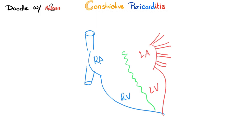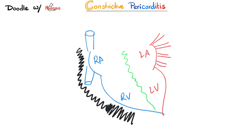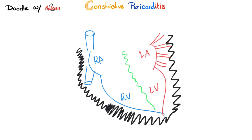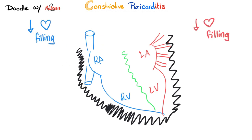What is constrictive pericarditis? The heart is constricted by a very thick, calcified pericardium. The ventricles are trying to relax during diastole, but they cannot relax when surrounded by this thick, rocky, calcified pericardium. The answer is no — the heart cannot relax during diastole, which decreases cardiac filling. There is decreased filling on both the right and left sides.